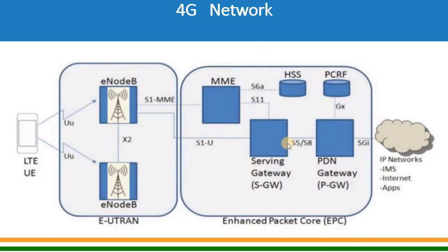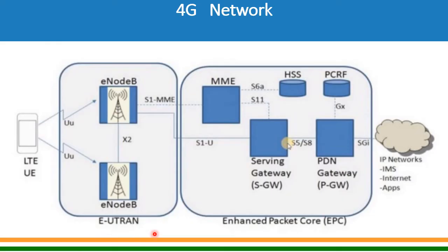Let us look at a slightly detailed network diagram of 4G. You have LTE user equipment, and then you have E Node B. If you recall 2G or 3G, you had BTS and BSC. In 4G, these are combined into a single entity called E Node B — BTS and BSC combined together on the radio side — and this radio is called E-UTRAN.